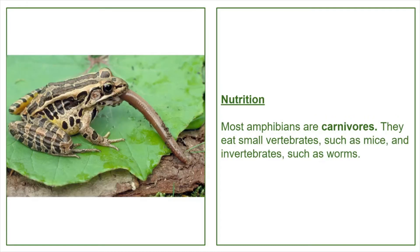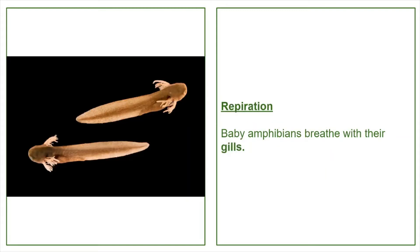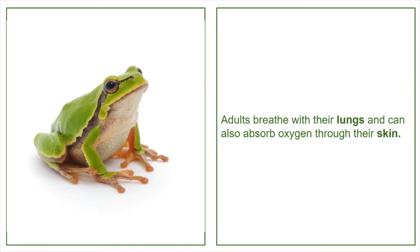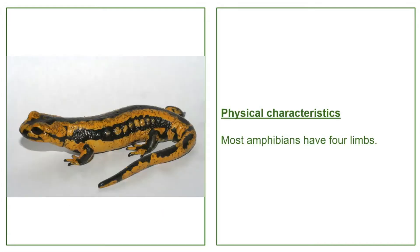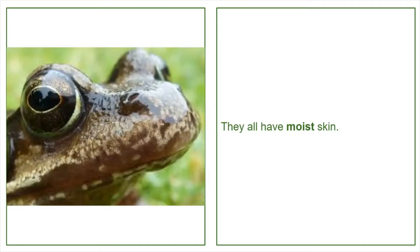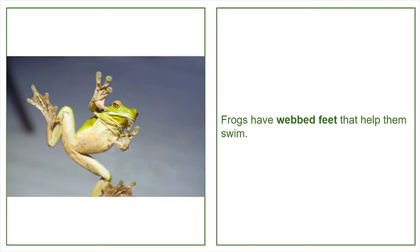Nutrition: most amphibians are carnivores — they eat small vertebrates such as mice and invertebrates such as worms. Respiration: baby amphibians breathe with their gills; adults breathe with their lungs and can also absorb oxygen through their skin. Physical characteristics: most amphibians have four limbs, they all have moist skin, and frogs have webbed feet that help them swim.